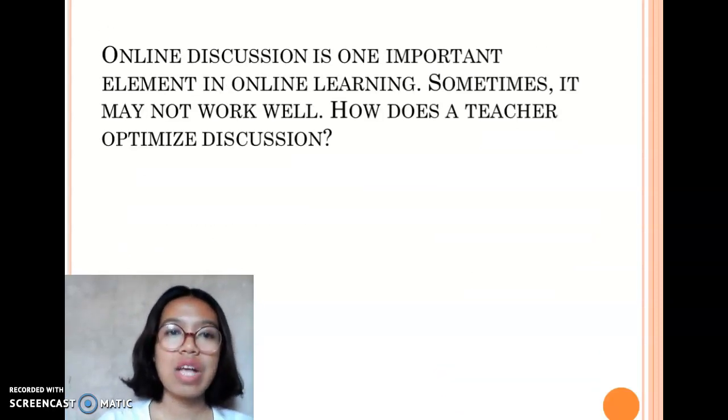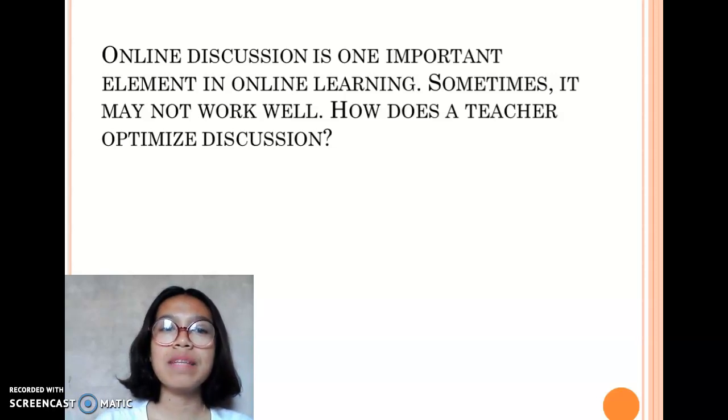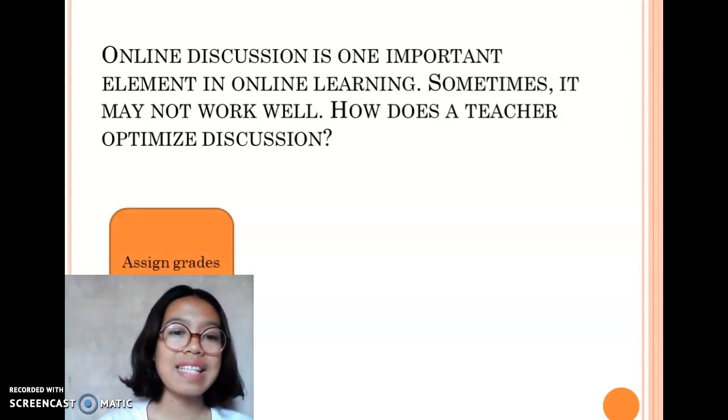We jump to the next question. The next question is online discussion is one important element in e-learning. Sometimes it may not work well. How does the teacher optimize discussion? The first one is assign grade. The teacher can assign grades because assigning grades for discussion makes them participate. If no grades are given, students may not participate.